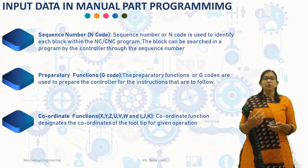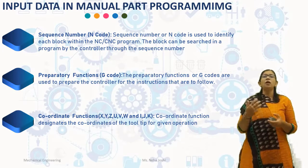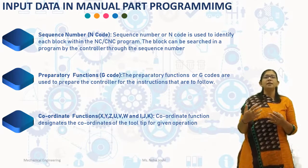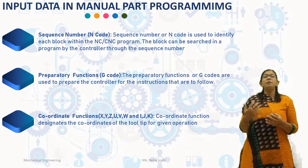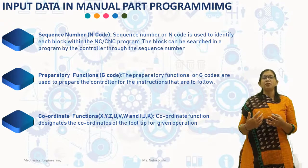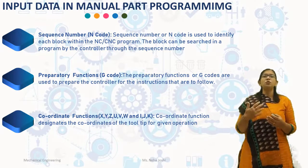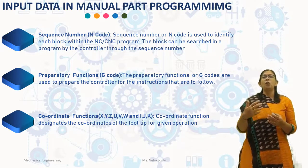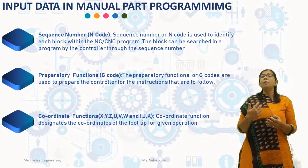Next is preparatory functions, also known as G code. The preparatory functions or G codes are used to prepare the controller for the instructions that are to follow. They are designated by the letter G followed by a two-digit number. The two-digit number fixed by the letter G indicates predefined functions. For example, G02 is used to prepare the NC/CNC controller for circular interpolation along an arc in the clockwise direction. This code may vary depending upon the controller.